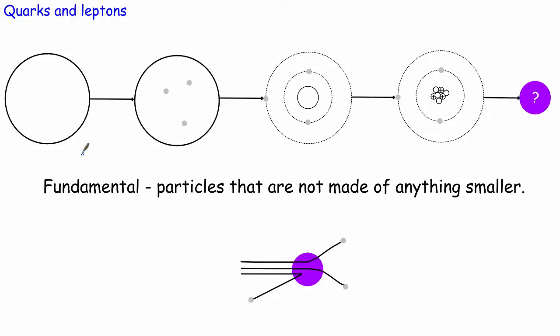We then discovered that there were smaller particles than atoms called electrons, and we came up with the idea that an atom would probably be made of something like a lot of positive charge with electrons inside it — you'll probably recognise this as the plum pudding model of the atom. Then Ernest Rutherford came along and did an experiment, modifying our ideas to an atom with a central nucleus and electrons going around the outside.